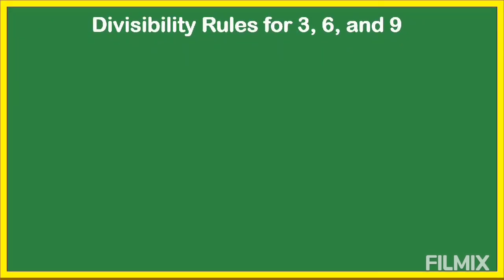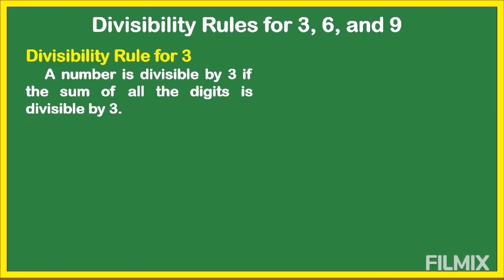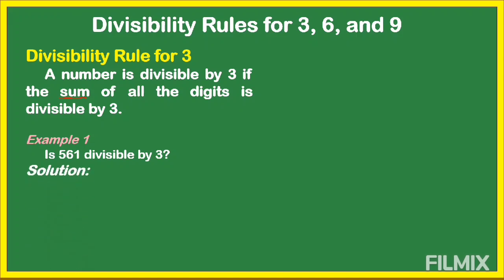The next group is divisibility rules for 3, 6, and 9. How do we know that a number is divisible by 3? A number is divisible by 3 if the sum of all the digits is divisible by 3. The word 'sum' means the answer of addition. For example: is 561 divisible by 3? We are going to add all the digits: 5 plus 6 equals 11, plus 1 equals 12.